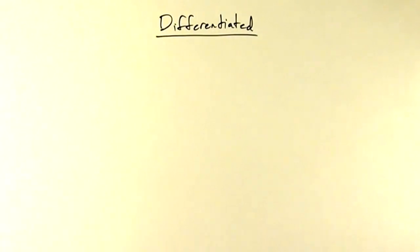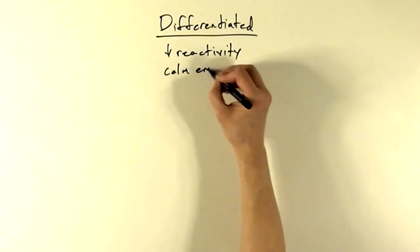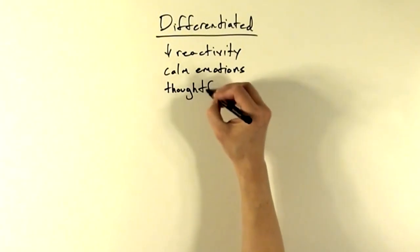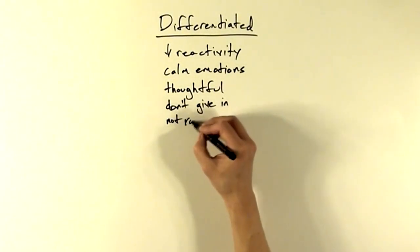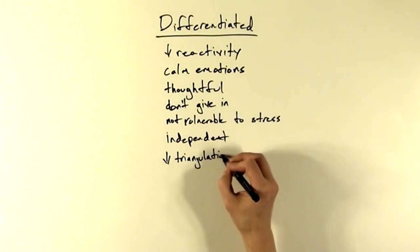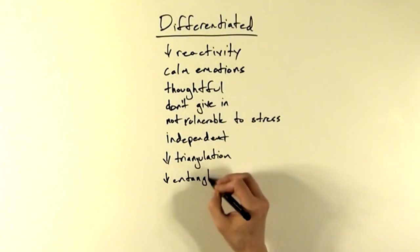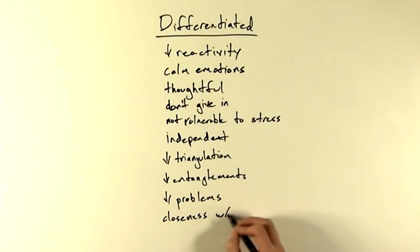In general, people at higher levels of differentiation have less emotional reactivity, have the ability to calm their emotions, can make more thoughtful and intentional decisions, don't give in to pressure from others, are less vulnerable to stress, are independent, are less prone to triangulation, have the ability to extricate themselves from emotional entanglements, have fewer physical problems, emotional problems, and social problems, can have closeness with others without getting lost in the relationship, and have more fulfilling relationships in general.